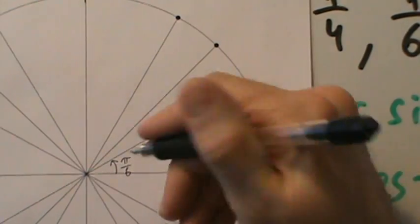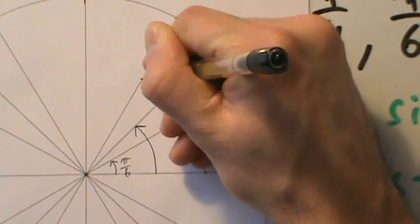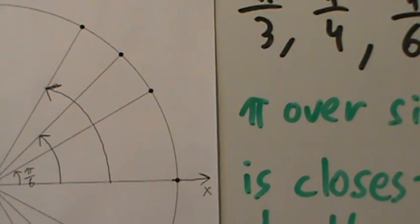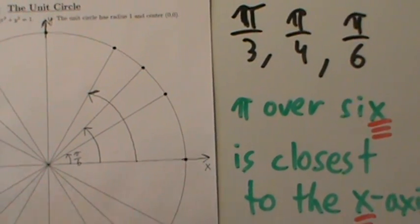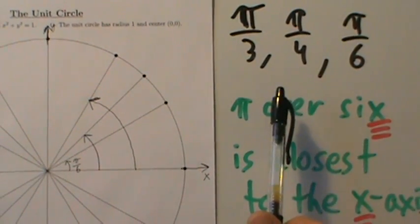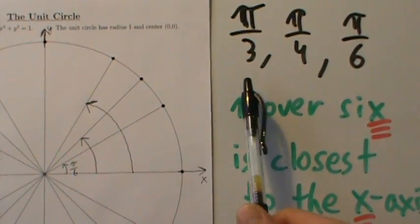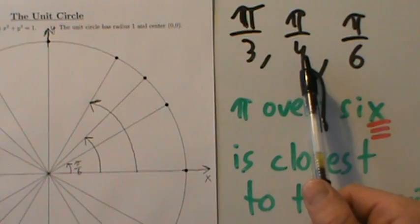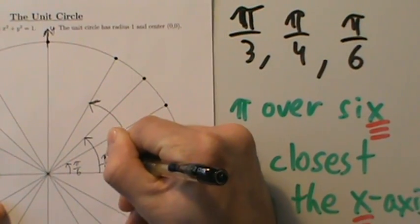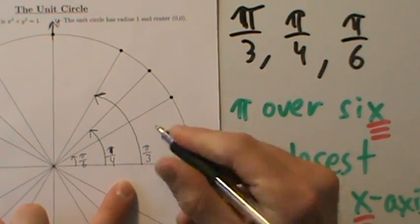Now we have this other angle and this other angle up here. One of them is pi over 4 and the other is pi over 3. A larger denominator means a smaller angle. Since 4 is larger than 3, pi over 4 is smaller than pi over 3. So pi over 4 is the smaller angle here, and that means the last one has to be pi over 3.